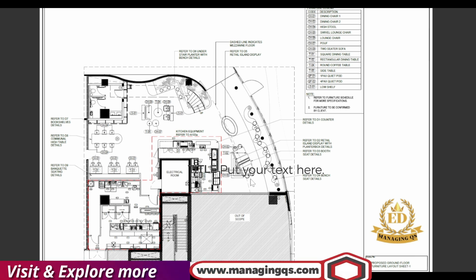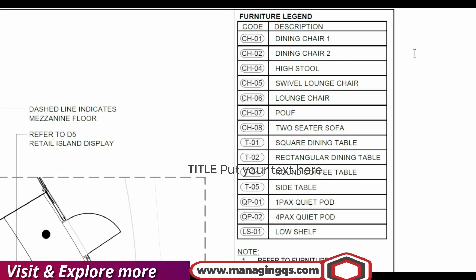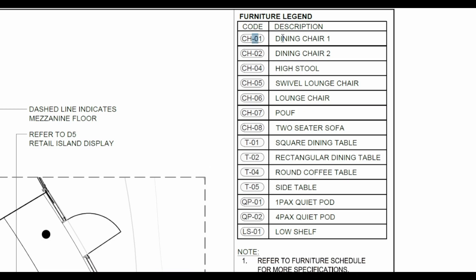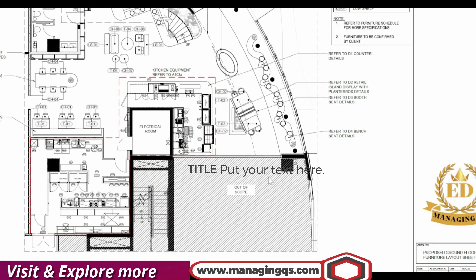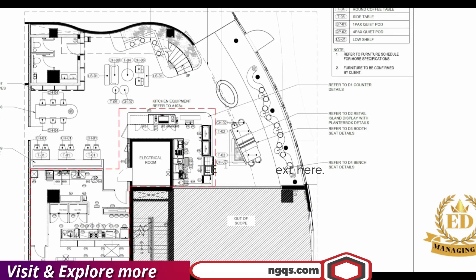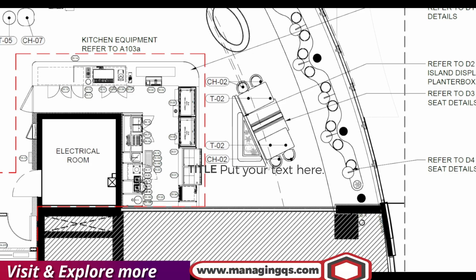Now we are going to discuss the loose furniture estimation techniques. You can see there are a lot of legends available here related to loose furniture. For example, CH1 means dining chair type number one, and CH2 means dining chair type number two. In this drawing they clearly mention items based on this notation, so there are a lot of loose furnitures available.